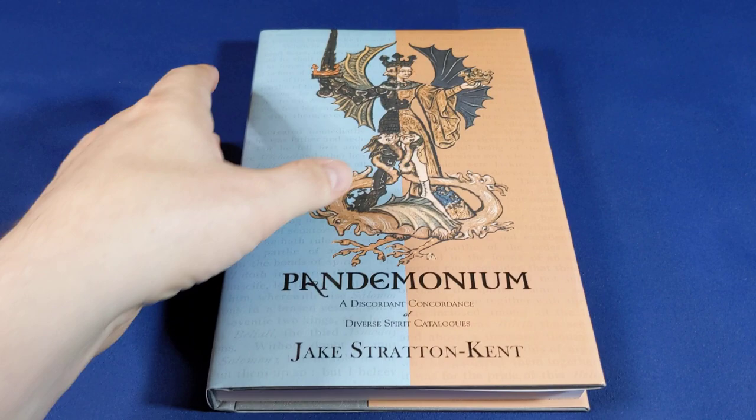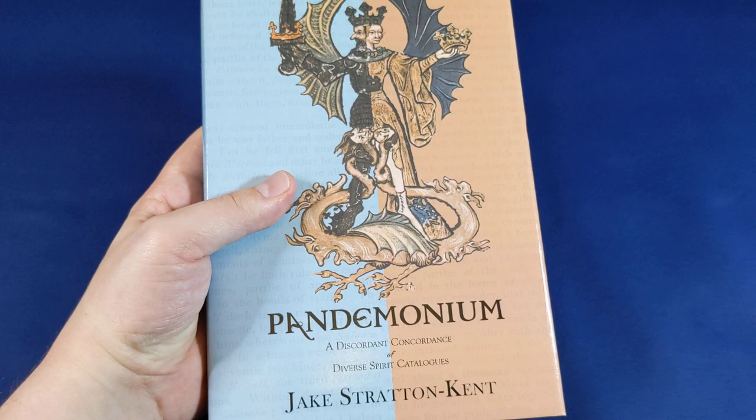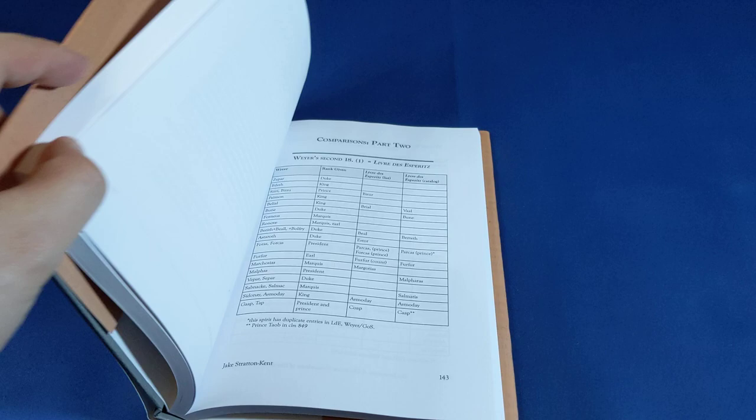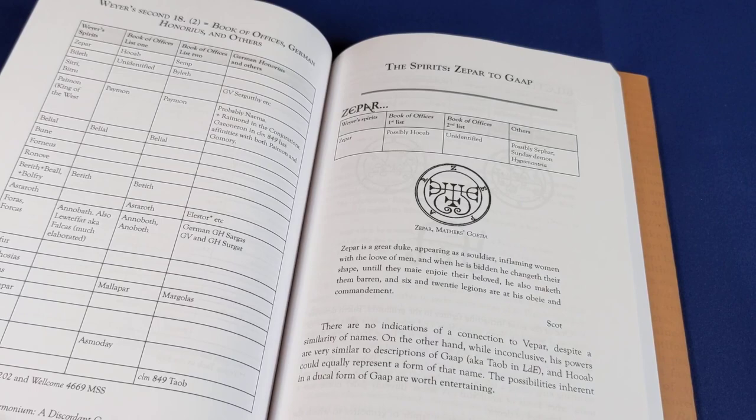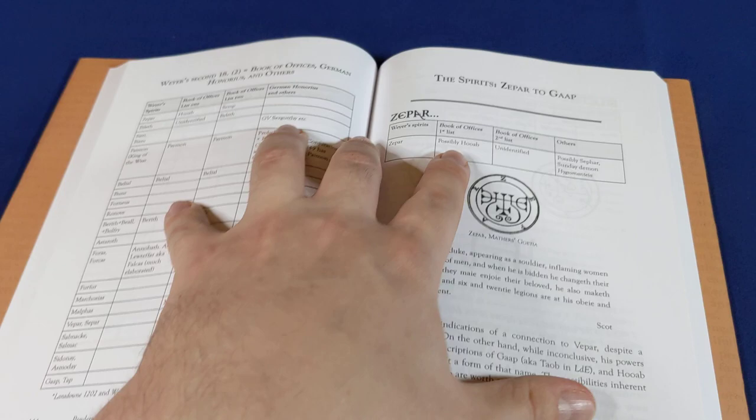Pandemonium by Jake Stratton Kent, being a discordant concordance of diverse spirit catalogues. It's exactly what it says on the tin. It is a list of spirits with their concordances. I've opened it up on a particularly dry looking page, but this book is everything and anything but dry.